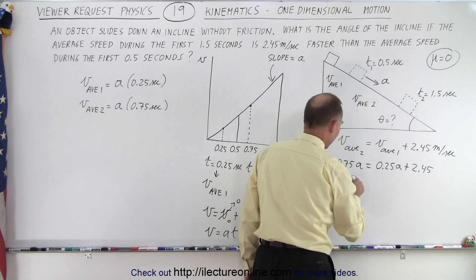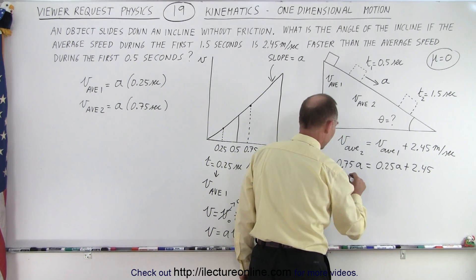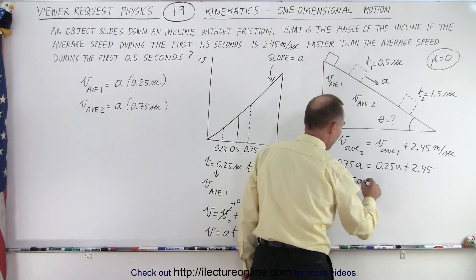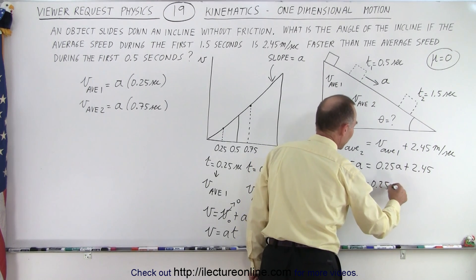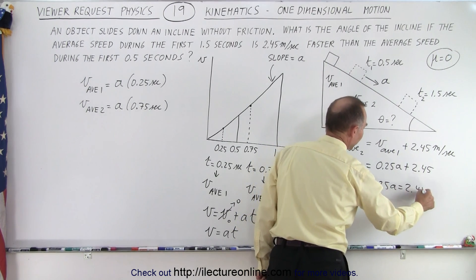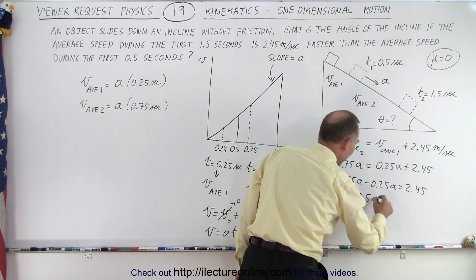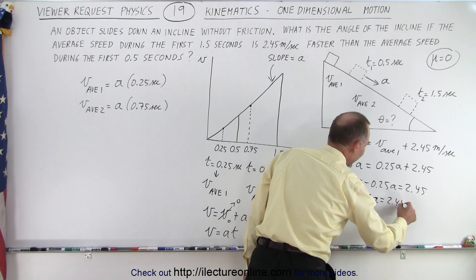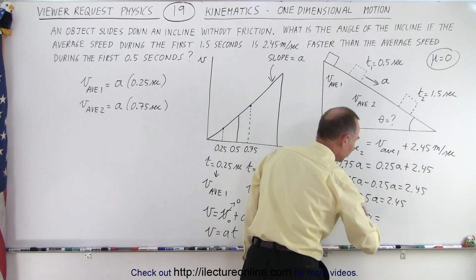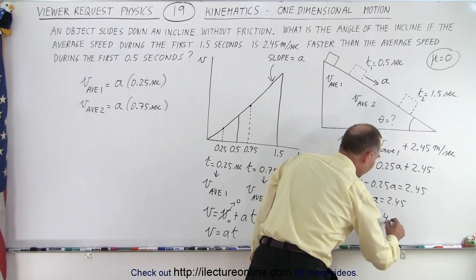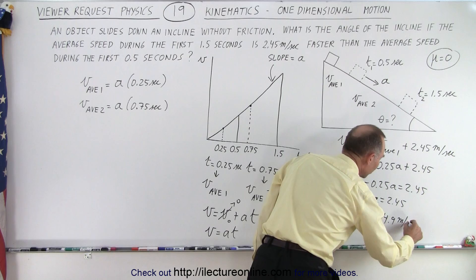Let's move this to the other side. So we have 0.75a minus 0.25a is equal to 2.45, or 0.5a equals 2.45. Or a is equal to, multiplying both sides by 2, 4.9 meters per second squared.